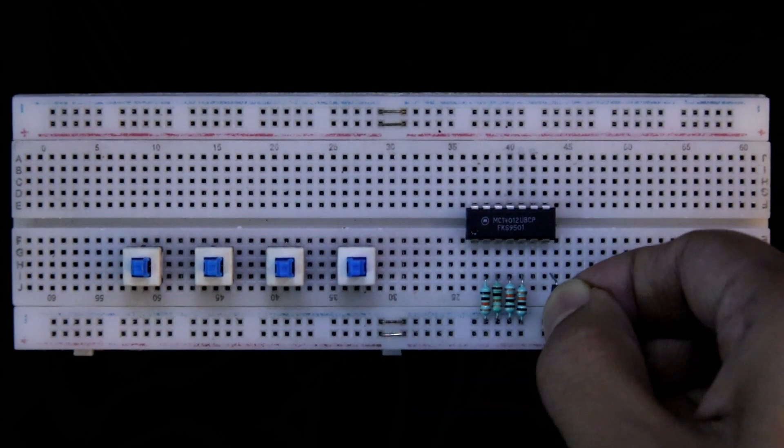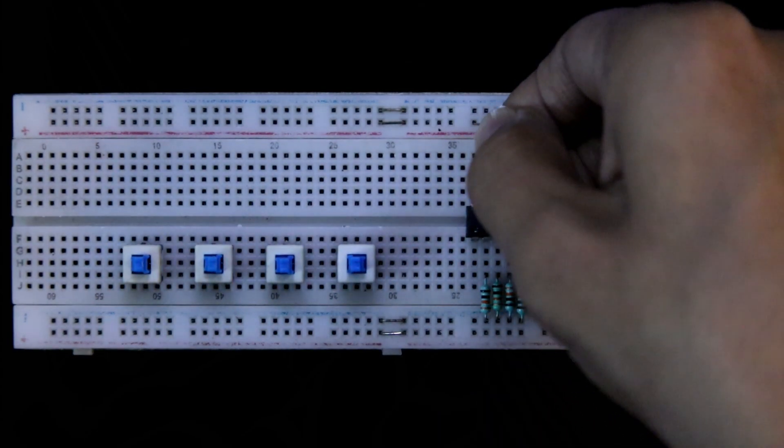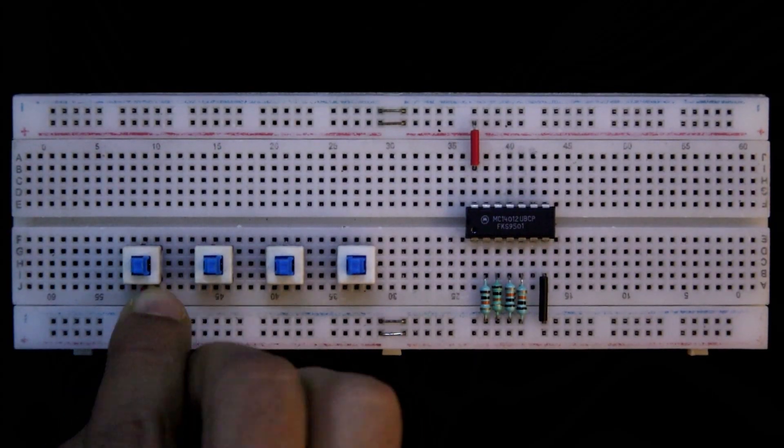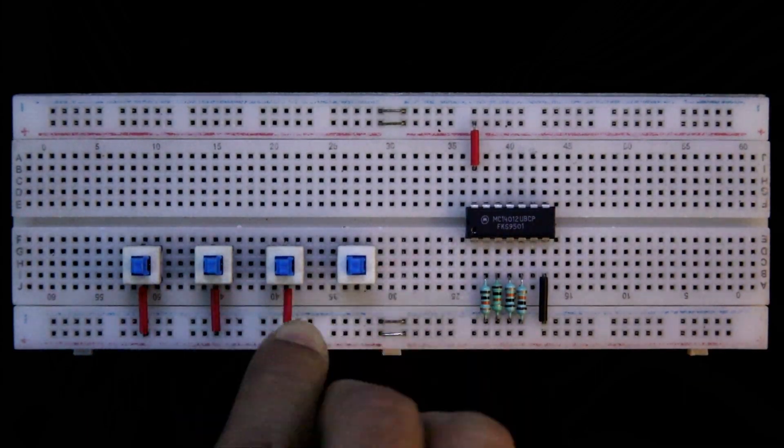Pin number 7 is connected to the ground. Pin number 14 is connected to the plus 5 volt. One pin of the switch is connected to the plus 5 volt.